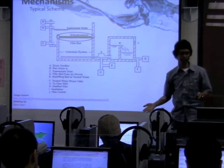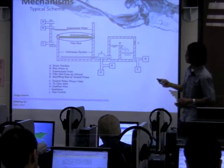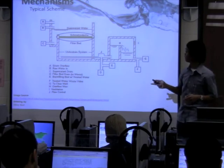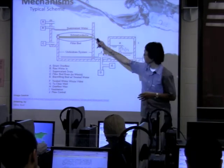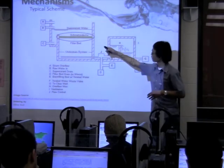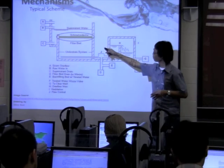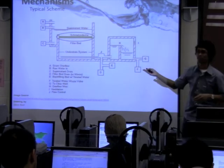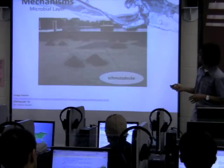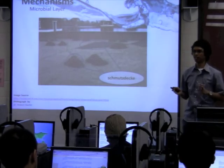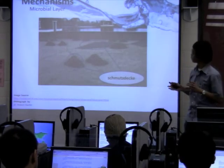Basically, the main components of slow sand filtration are this tank, the filter bed with the sand filter, and an underdrain system. That's all.